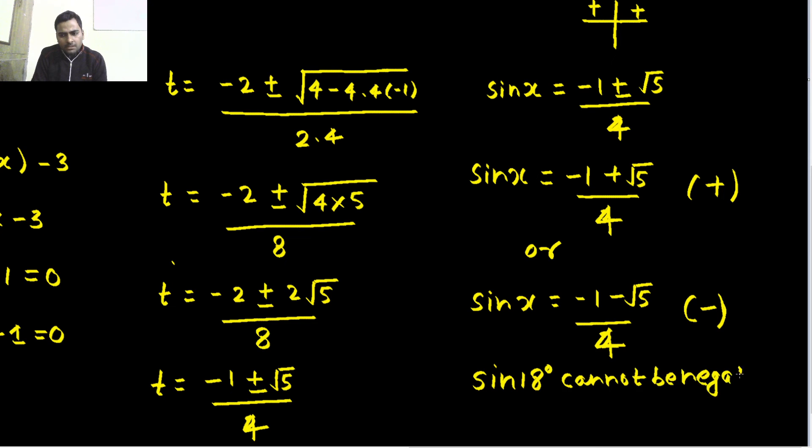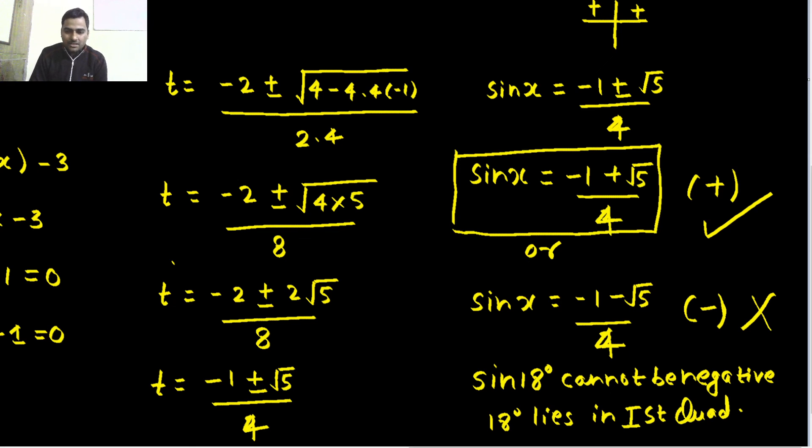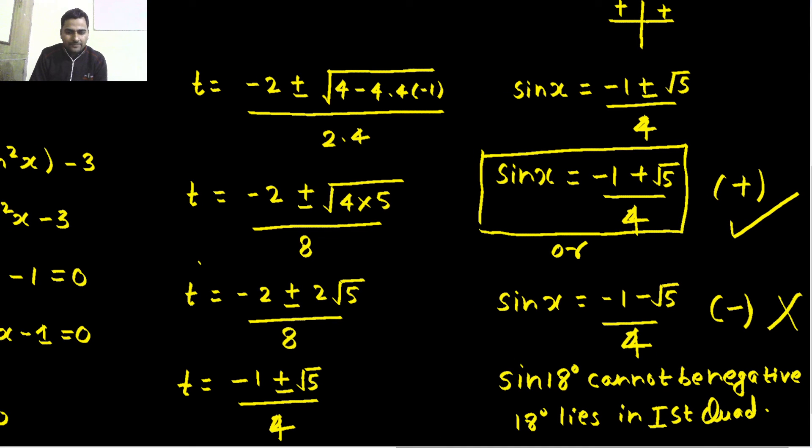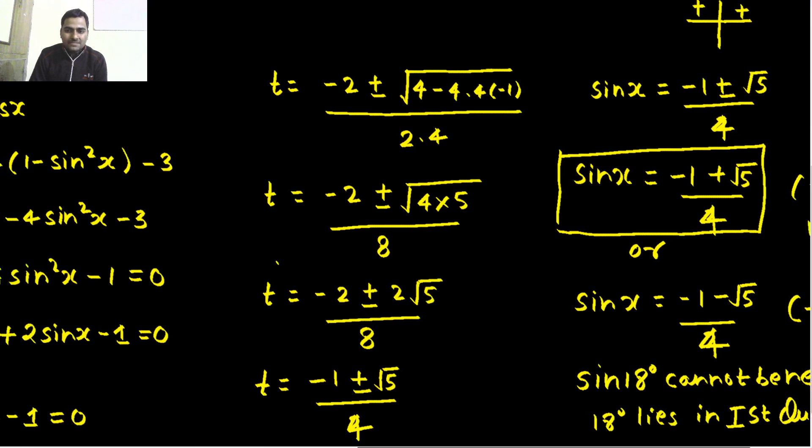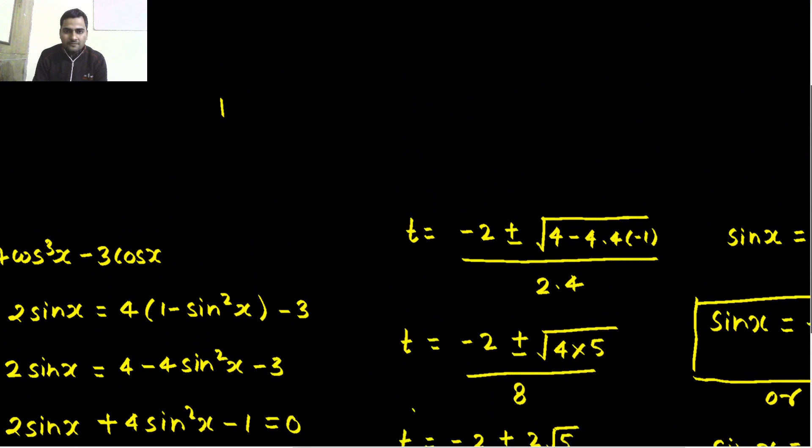Why? Because sine is positive in first quadrant and second quadrant. It's a first quadrant angle because 18 degree 0 to 90 degree lies in the first quadrant. But it should not have been negative. Sine 18 I am saying cannot be negative. Why? Because 18 degree lies in first quadrant. If you say 18 degree or pi by 10 it doesn't matter. So, we will neglect this value and take the first value. So, here we are. Sine x equals to this or if you want to write it in a better way then sine 18 is minus 1 plus root 5 by 4 that's what we got today.